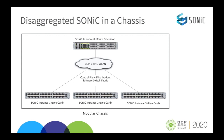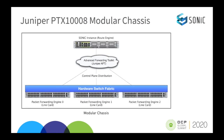Here is a diagram illustrating disaggregated Sonic in a chassis. As you can see, there are multiple Sonic instances that comprise the cluster. BGP, EVPN, and VXLAN handle control plane distribution as well as the software fabric. Contrast that with the Juniper PTX-1008, with a single router instance and a hardware switch fabric that interconnects all the line cards. None of the line cards run Sonic. We use Juniper's Advanced Forwarding Toolkit, or AFT, to distribute routes across the line cards. AFT is part of the Juniper HAL.